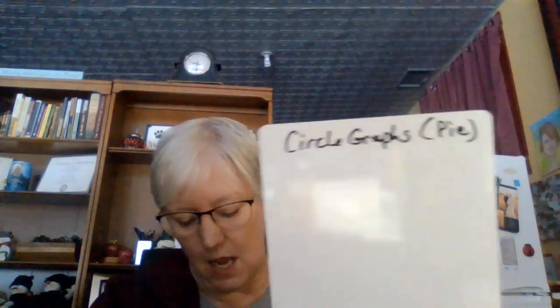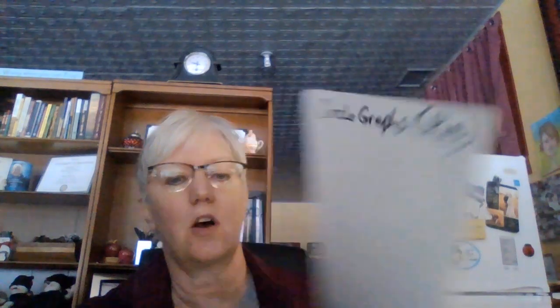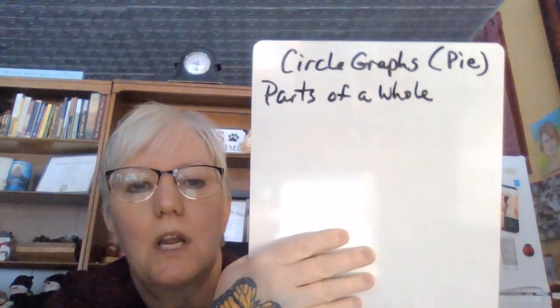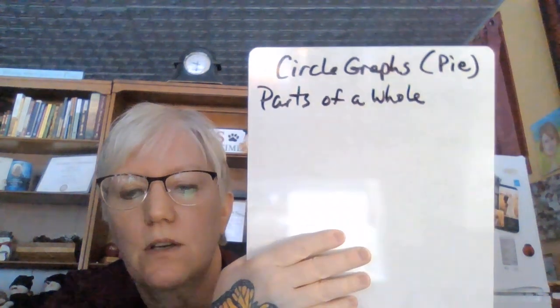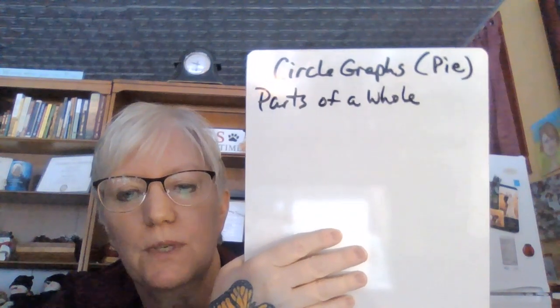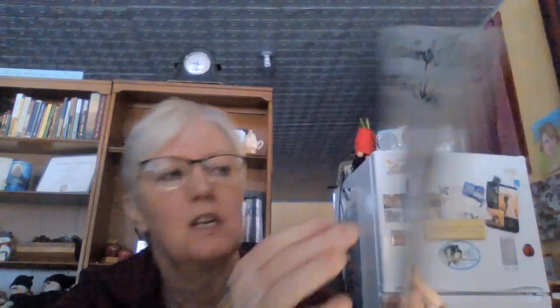The next one is a circle graph — you're very familiar with circle graphs, sometimes called a pie graph. What this is, is it is always marking parts of a whole. We're always talking about it adding up to 360 degrees, which is the total of the circle, or adding up to 100% of whatever it is we're talking about.